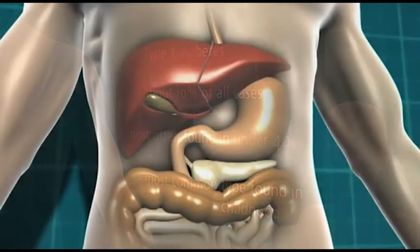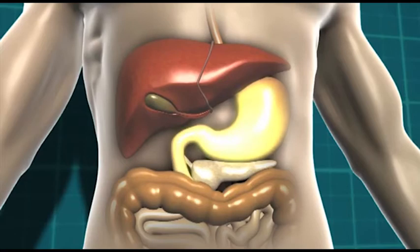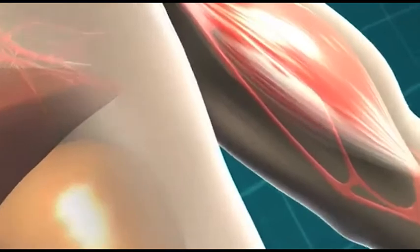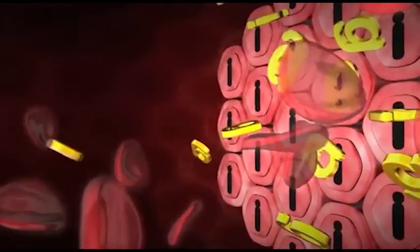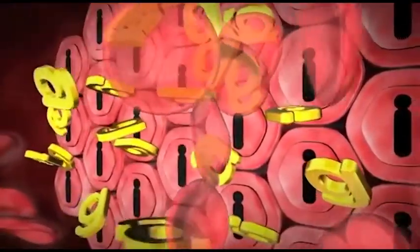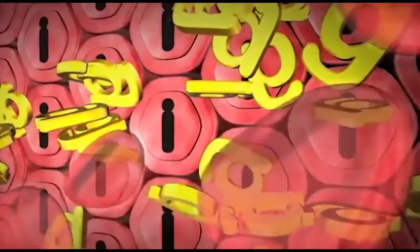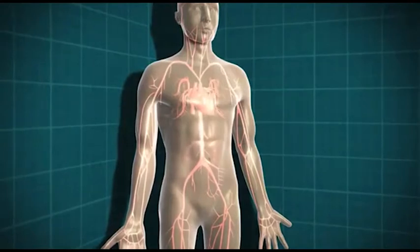In type 1 diabetes the carbohydrate-containing food is broken down into glucose as normal, and that glucose then moves into the bloodstream. Normally the body would produce insulin to let that glucose into the cells, but in type 1 diabetes there is no insulin being produced, so the glucose can't get into the body cells at all. As a result, the level of glucose in the blood rises and rises.